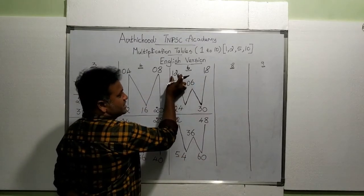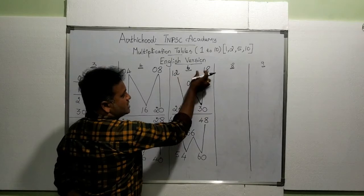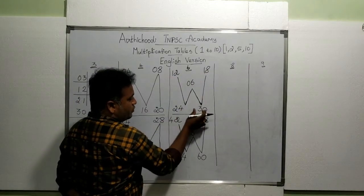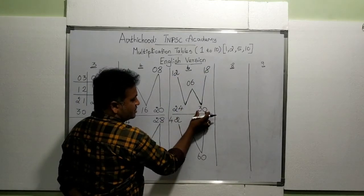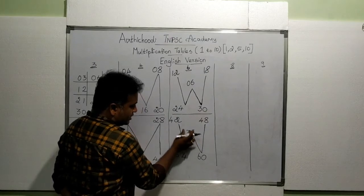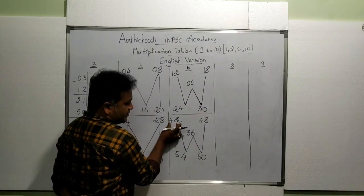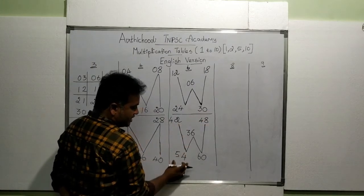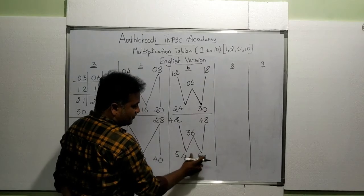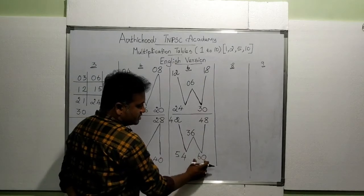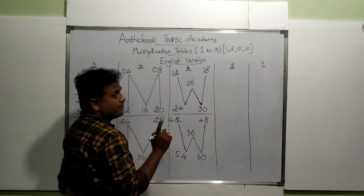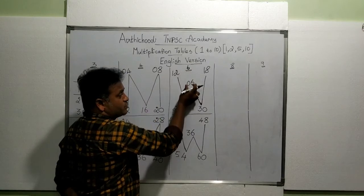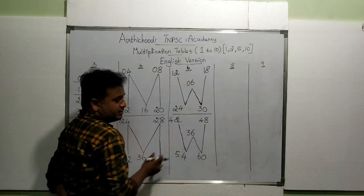Now read: 6 ones are 6, 6 twos are 12, 6 threes are 18, 6 fours are 24, 6 fives are 30, 6 sixes are 36, 6 sevens are 42, 6 eights are 48, 6 nines are 54, 6 tens are 60. One important thing: if you write the sixth table, you start with 6 — don't forget it!